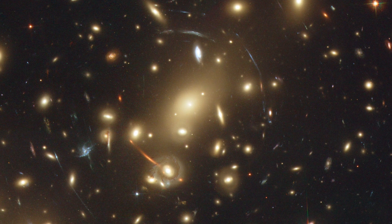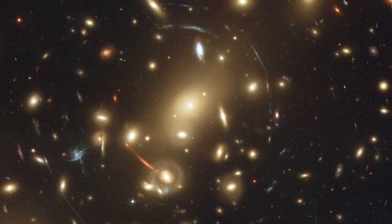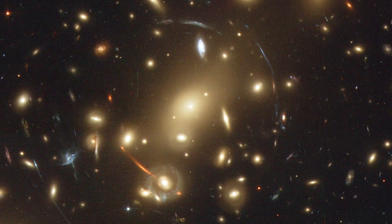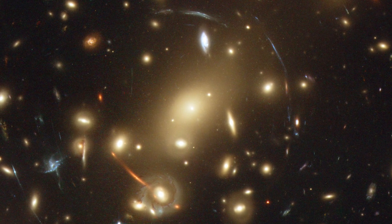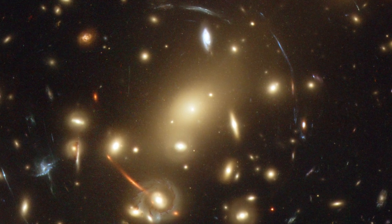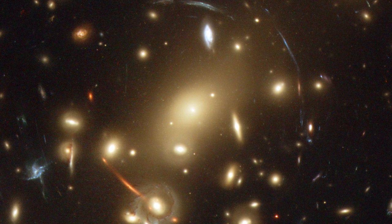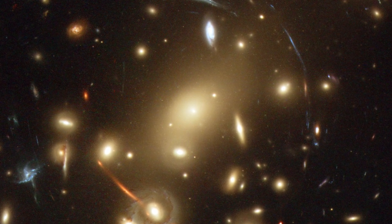Hubble makes use of this magnification effect to study beyond the sensitivity of its 2.4-metre diameter primary mirror by showing us the most distant galaxies humanity has ever encountered. Hubble's observations of lensing effects have also given us a glimpse of the cosmos that will be unveiled by the upcoming NASA-ESA CSA James Webb Space Telescope.